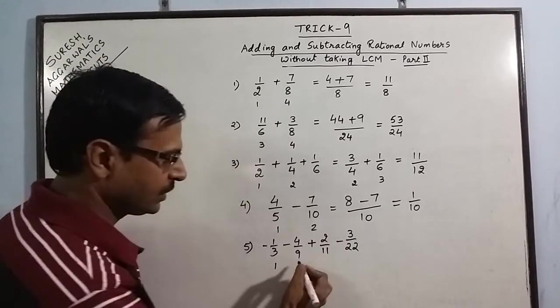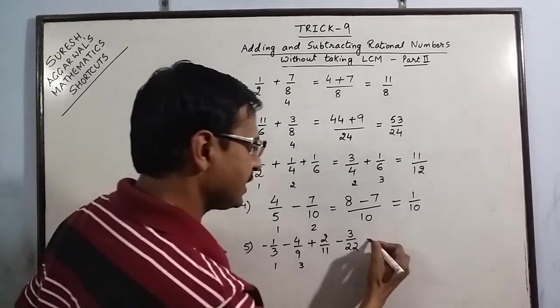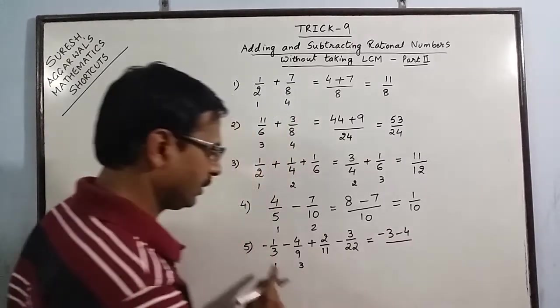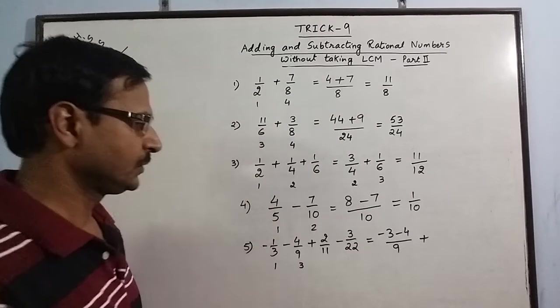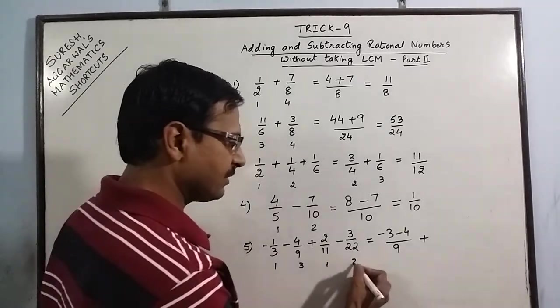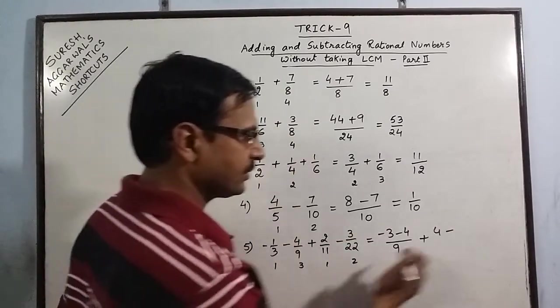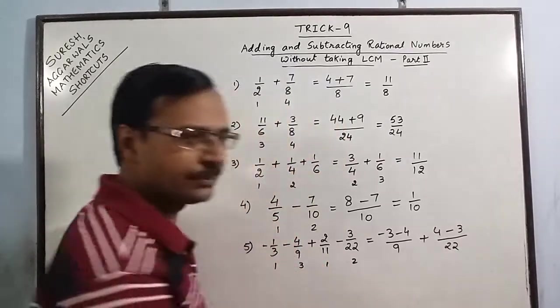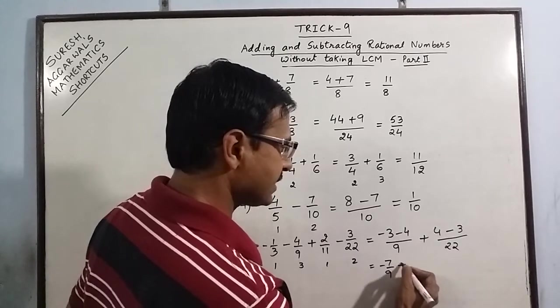3 ones are 3, 3, 3's are 9. Minus 1 into 3 is minus 3, minus 4 upon either this 9 or this 9. Plus, now I cancel out the common factor 11 between these two denominators. 11 ones are 11, twos are 2. 2 into 2 is 4, minus 3 ones are 3 upon 11 twos are 22. So this is minus 7 by 9 plus 1 by 22.